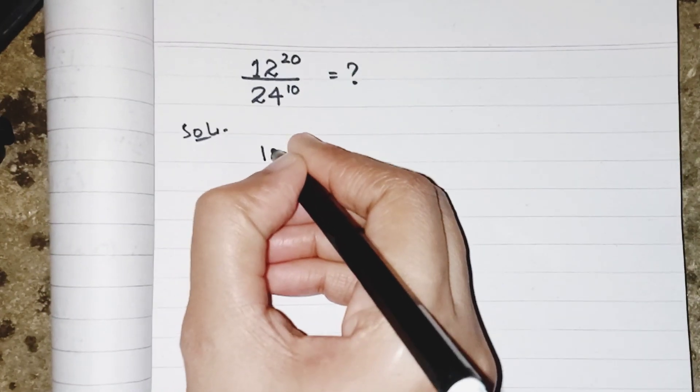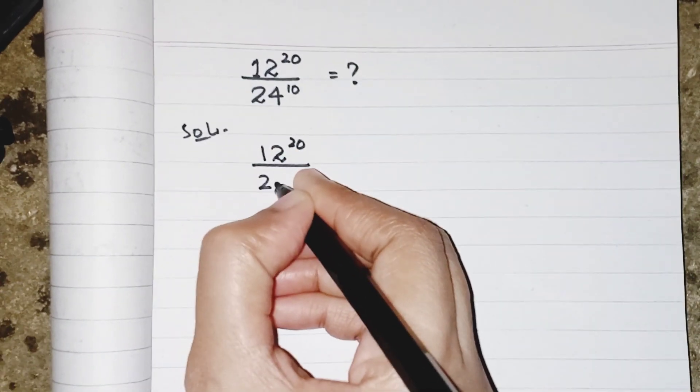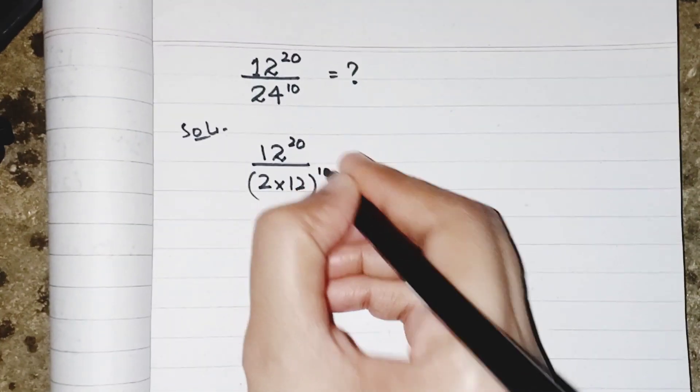So in place of 24, I can write 2 multiply by 12, which results in 24 to the power 10.